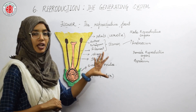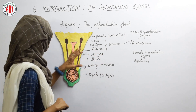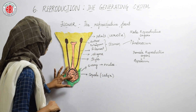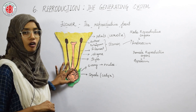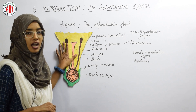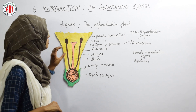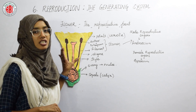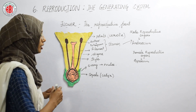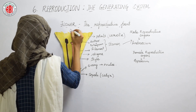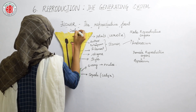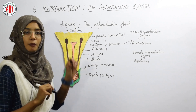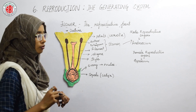We can see the presence of both male and female reproductive organs in this flower, so this flower can be called a bisexual flower. The name of this flower is datura, which we have already studied is a bisexual flower.